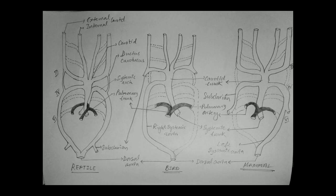In reptiles, they are fully terrestrial vertebrates, so gills are completely absent. In the diagrammatic representation you don't see any gills. The first diagram is reptilian, the second is for birds, and the third is the mammalian aortic arch system. Only three functional aortic arches remain — the third, fourth, and sixth.